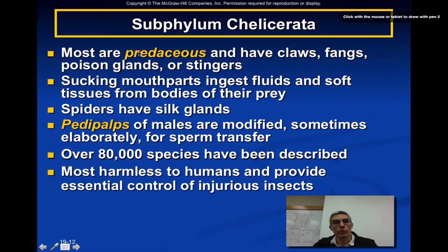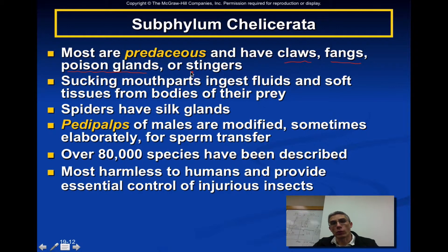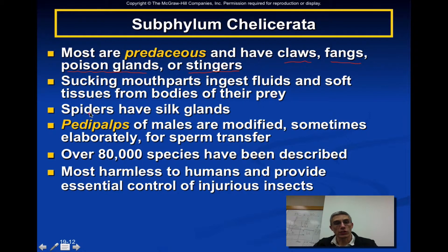Most of these animals will be considered predators, and so they have either claws, fangs — possibly with poison glands — or stingers, depending on the type of arachnid. Most of them do have sucking mouthparts to help them ingest fluids or soft tissue from their prey. If we're talking specifically about spiders, these animals do have silk glands.